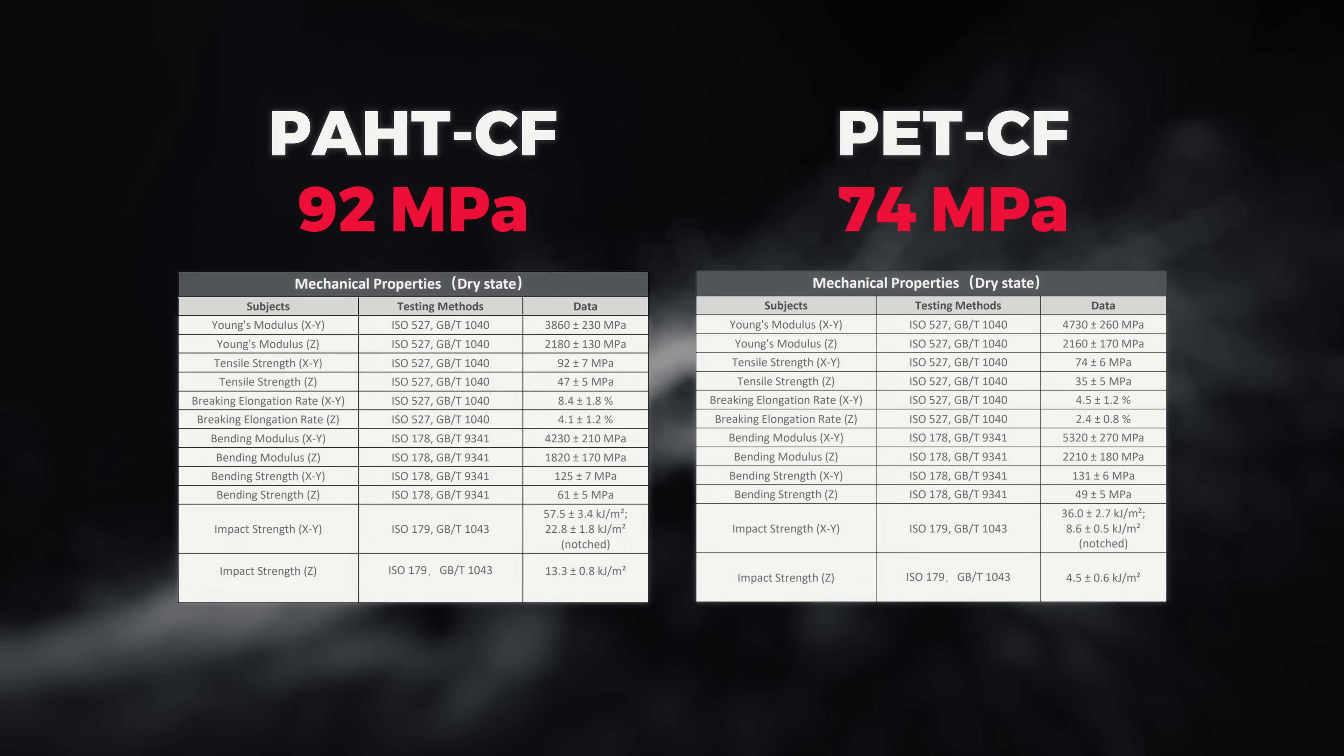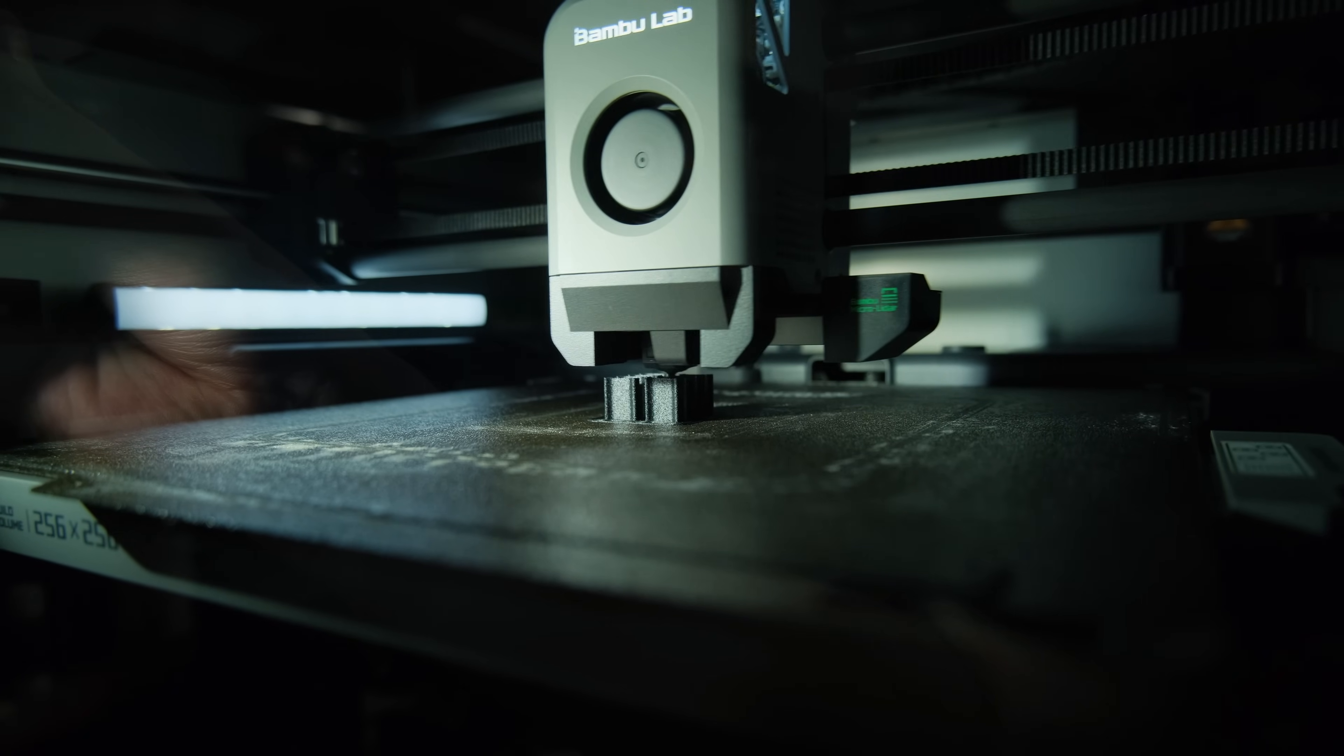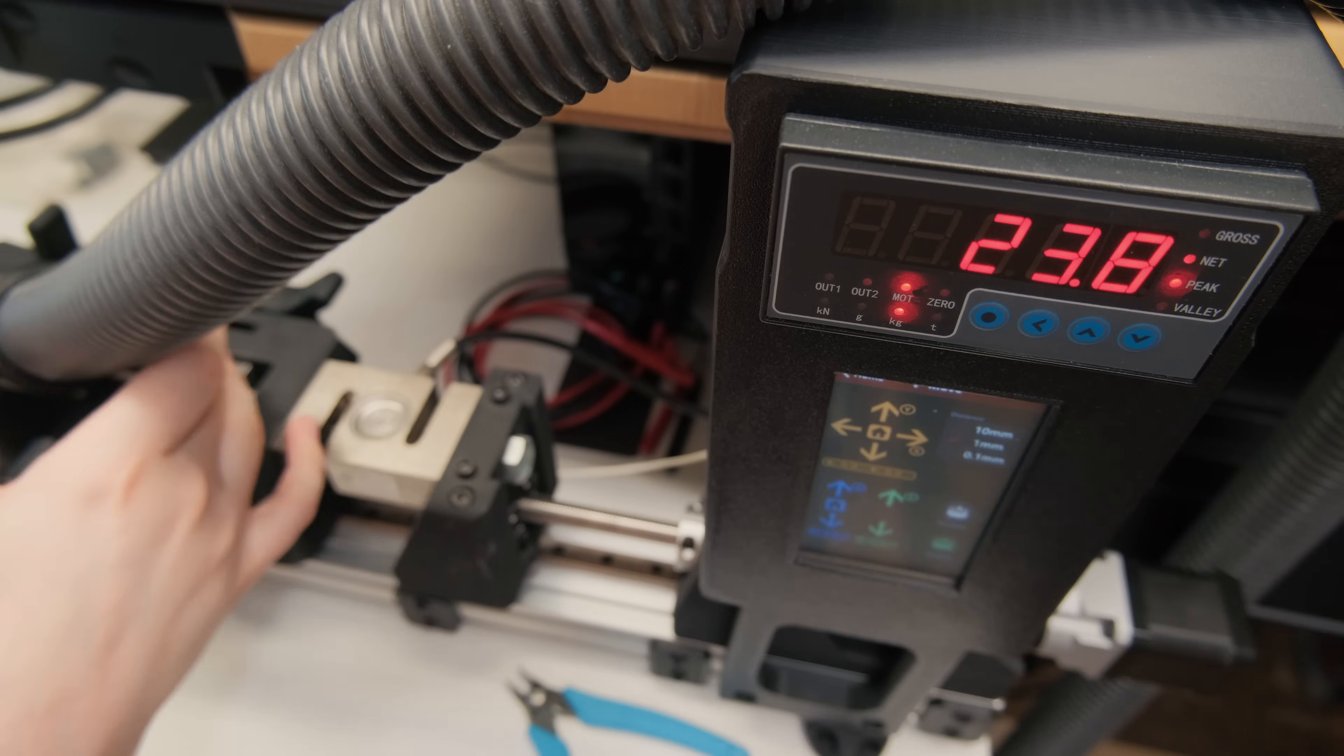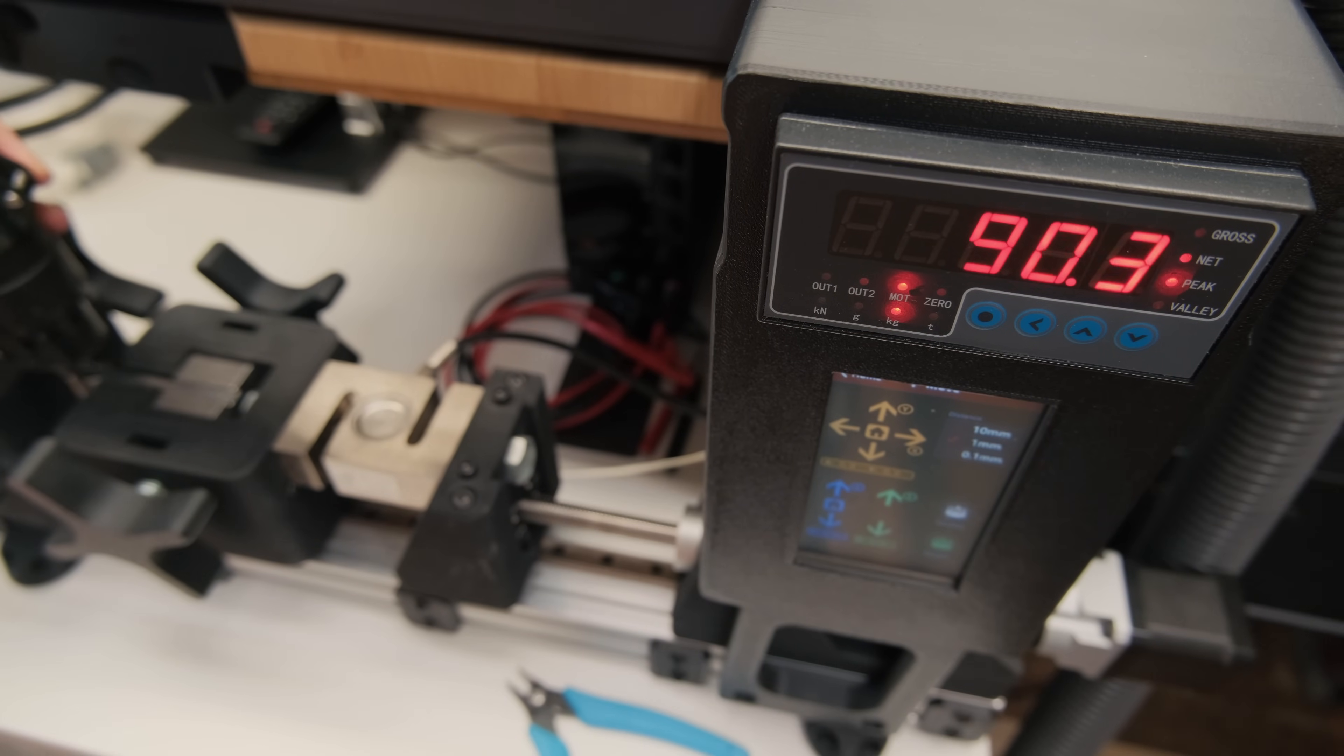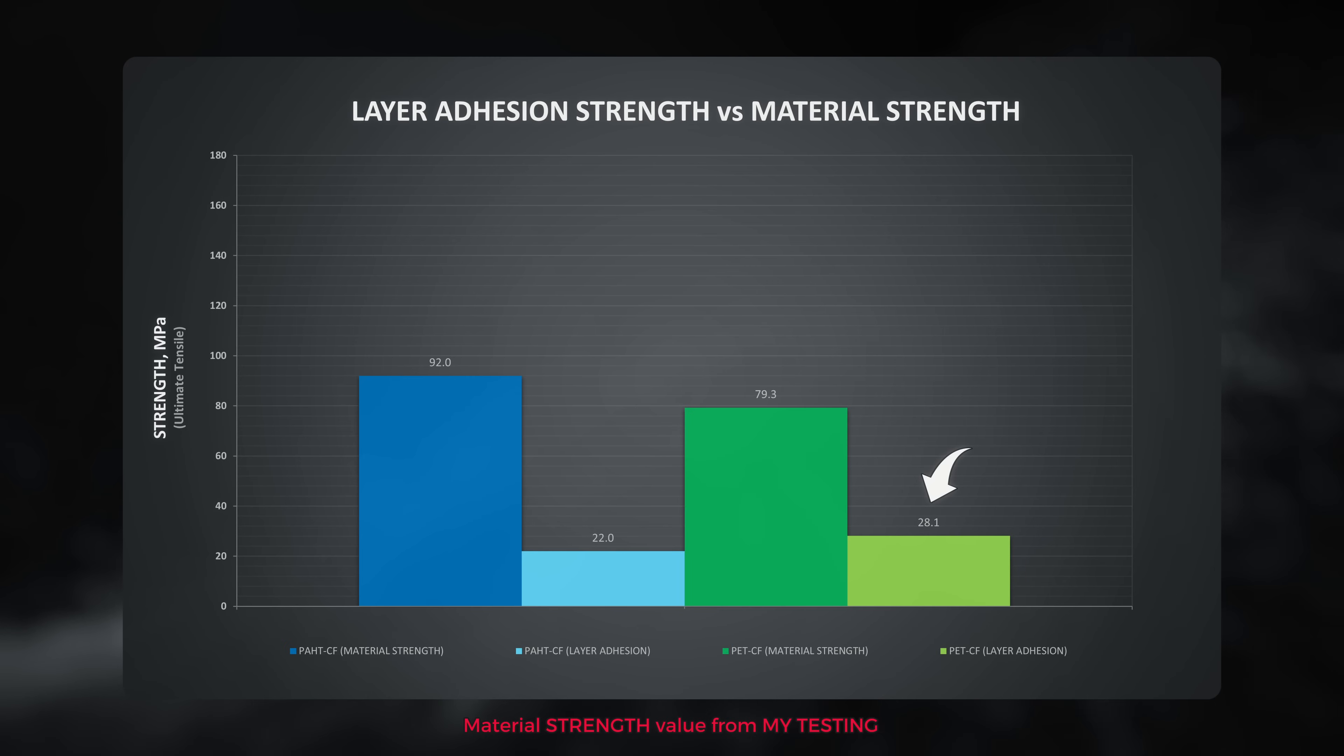As this PET-CF filament had a lower tensile strength than the previously tested nylon, I was able to print it and break it for the apples to apples comparison. It ended up having a very similar strength to the one specified in the datasheet and resulted in decent adhesion of around half of the material strength.